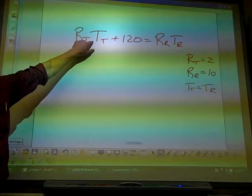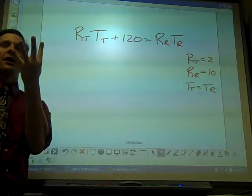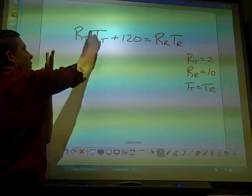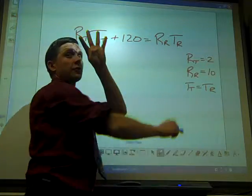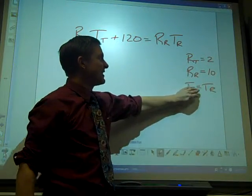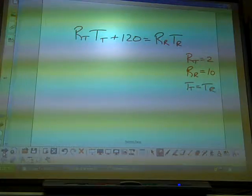Here's an equation, R_T T_T plus 120 equals R_R T_R. That's four variables. Remember, the subscript doesn't count. R_T is 1, T_T is 1, R_R T_R, there's four. R_T, R_R, and T_T equals T_R. Four equations, four unknowns. This is solvable.